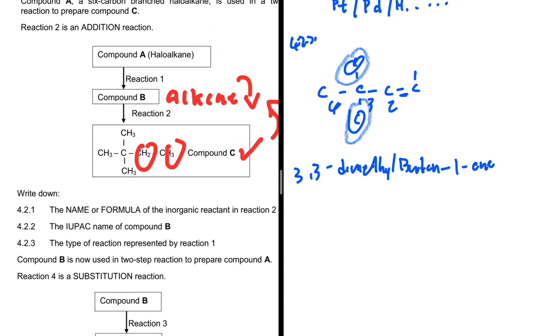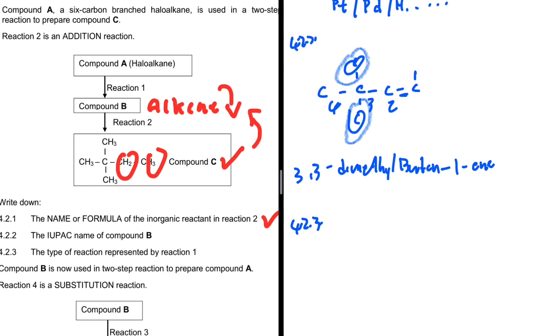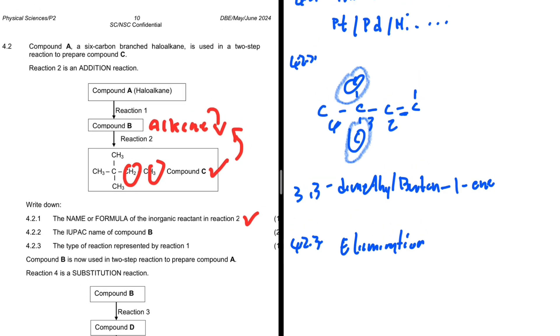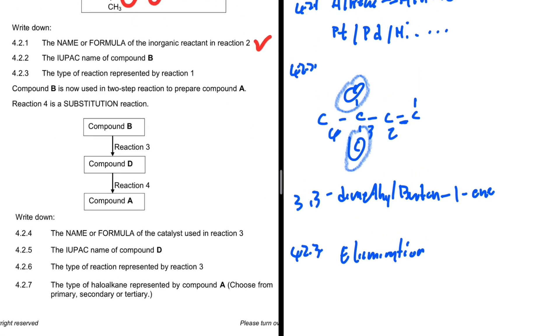That is 4.2.2. And then what about 4.2.3? The type of reaction represented by reaction 1. In reaction 1, we start with an alkane in compound A, and we end up with an alkene. Clearly it is an elimination reaction, because we start with a saturated compound and we end up with an unsaturated compound. That is 4.2.3.